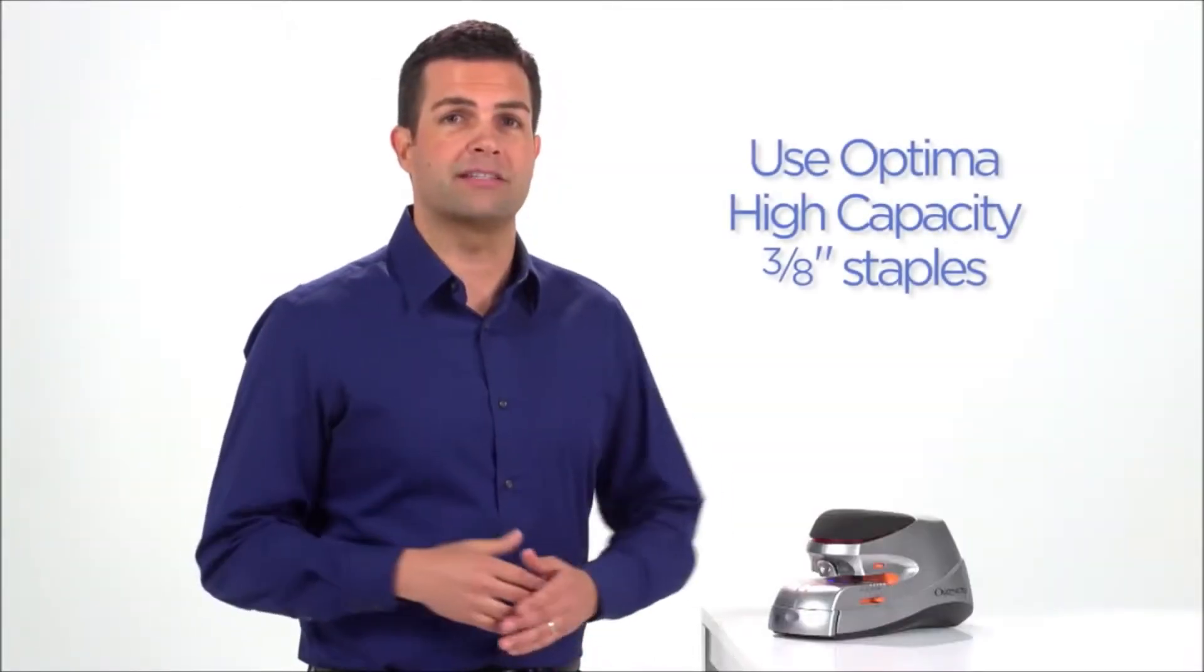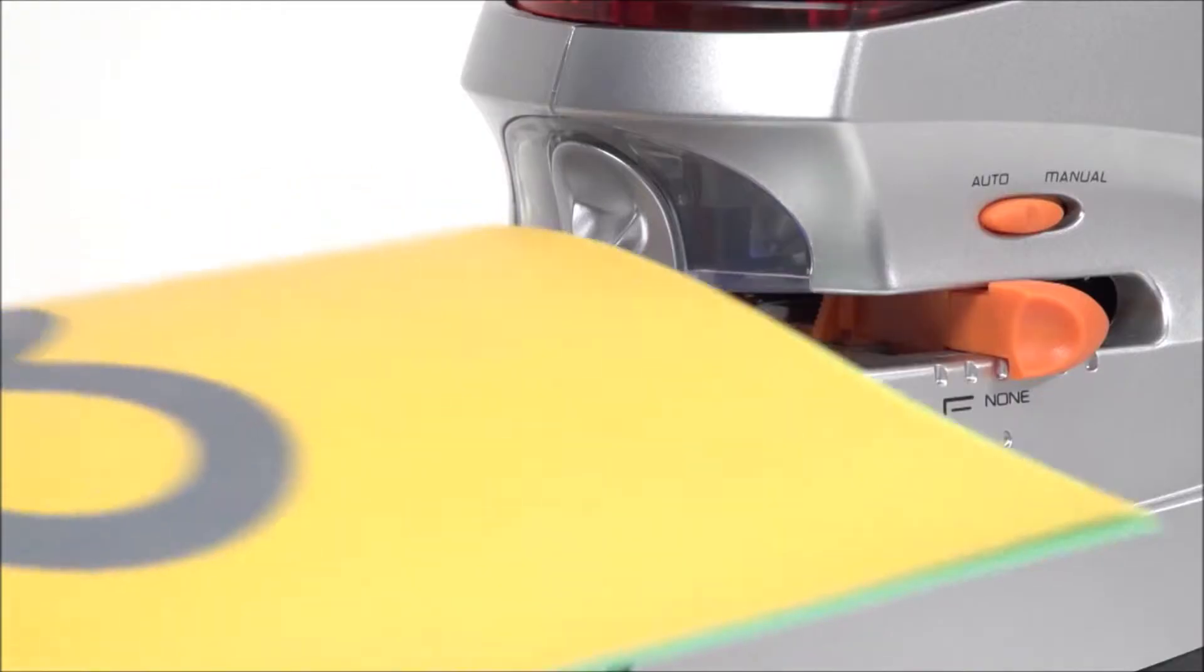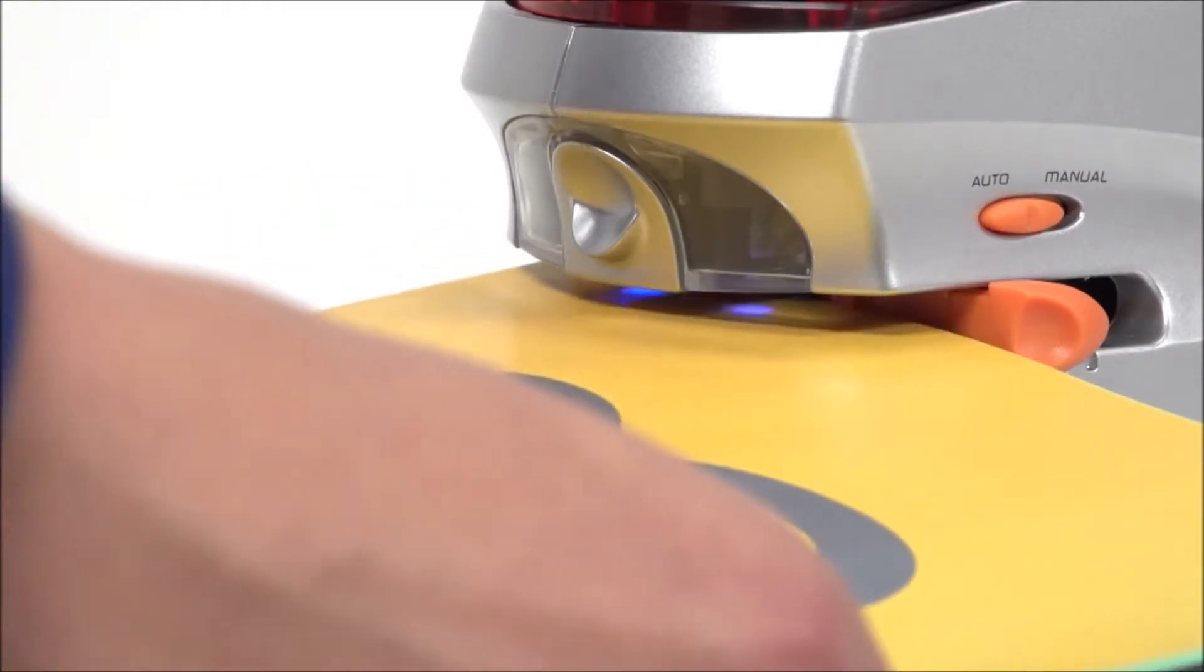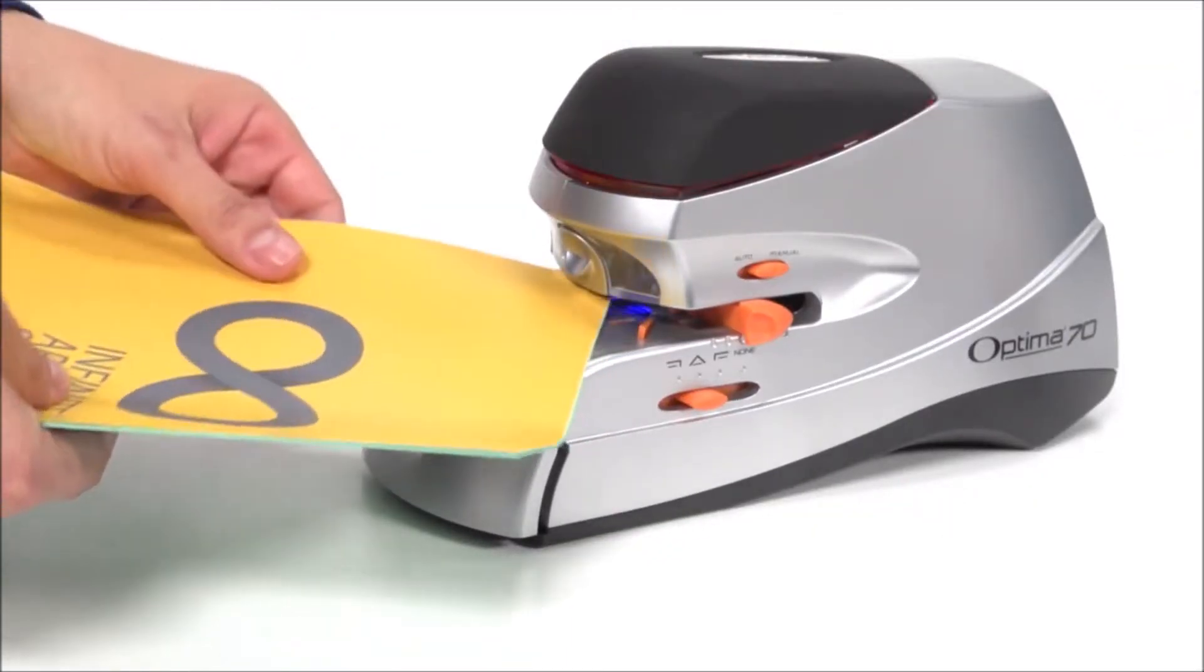Most staplers that can staple up to 70 sheets do not effectively staple just two sheets of paper. In the automatic mode, the stapler is triggered simply by inserting paper. In the manual mode, just tap on the top to activate.